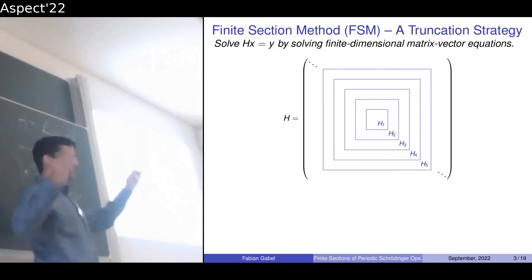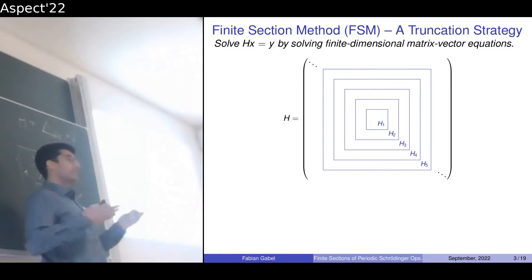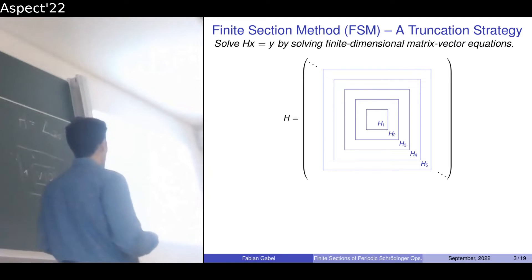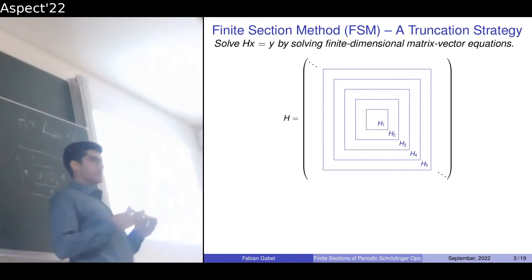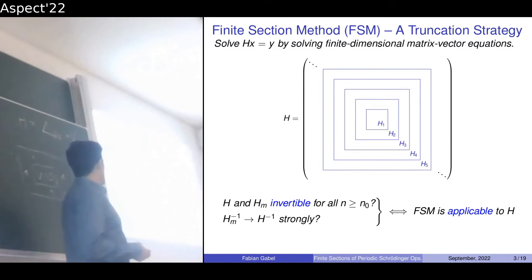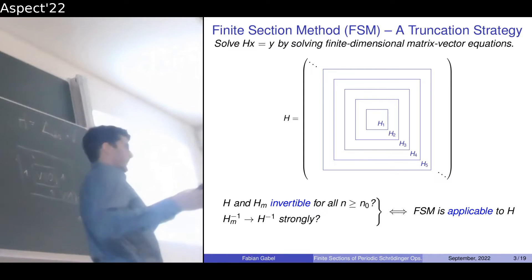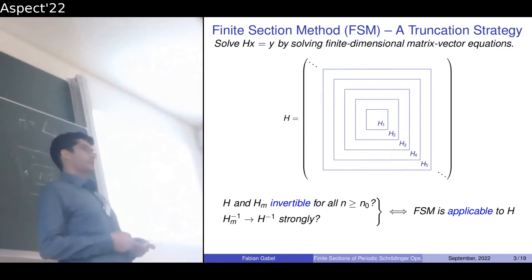We have this increasing sequence of matrices, and if we want to approximate something, these approximants should be invertible at some point, and of course they should approximate the inverse of our original operator strongly. In terms of an algorithm, we solve finite-dimensional problems and this generates a sequence of solutions. We want this sequence of solutions to converge to the solution of the original system. If this is the case, we call the finite section method applicable to our operator. This talk will be about an applicability analysis of this truncation method for the class of periodic Schrödinger operators.